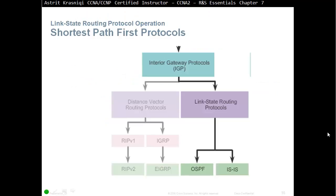This is going to be a short lesson, as we're going to talk a lot more about link state routing protocol in Chapter 8, which is OSPF — a chapter dedicated to link state routing protocol. You're going to learn a lot more in CCNA 3, where two chapters are dedicated to link state routing protocol.